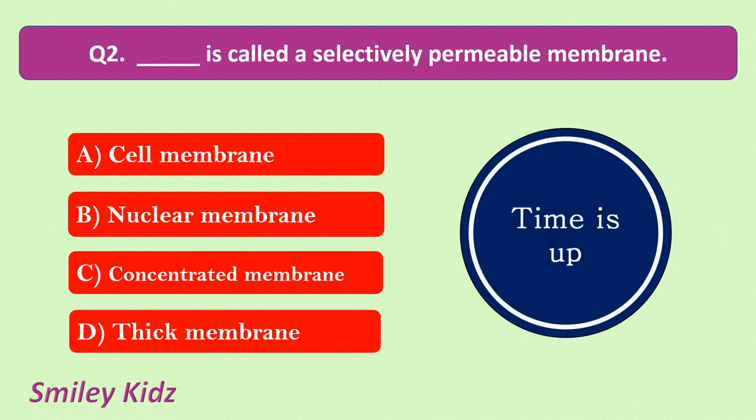Your time is up and the correct answer is cell membrane. Cell membrane is also called a selectively permeable membrane.